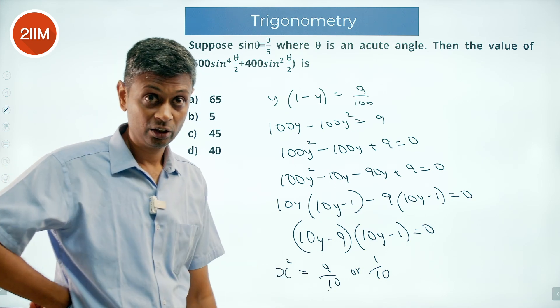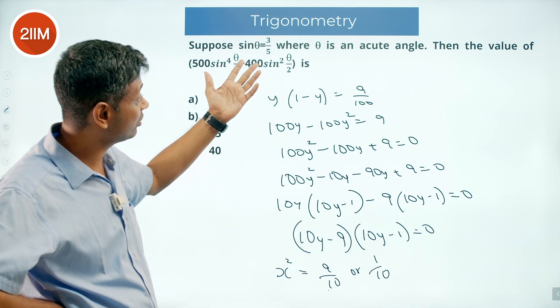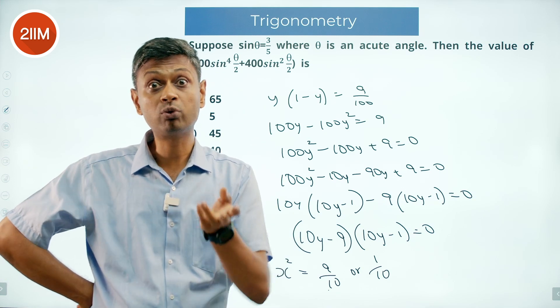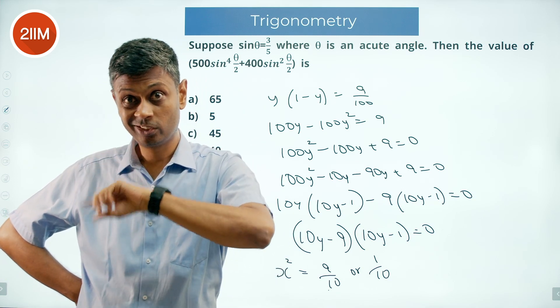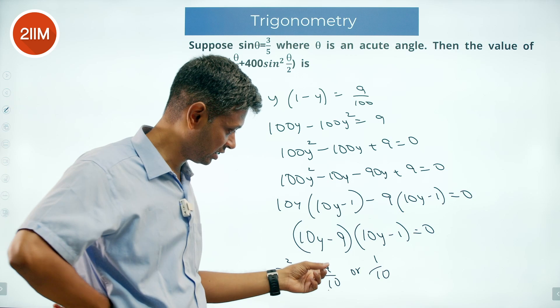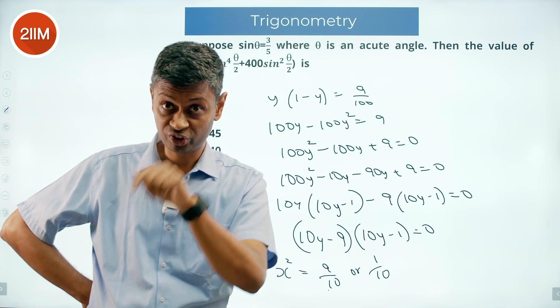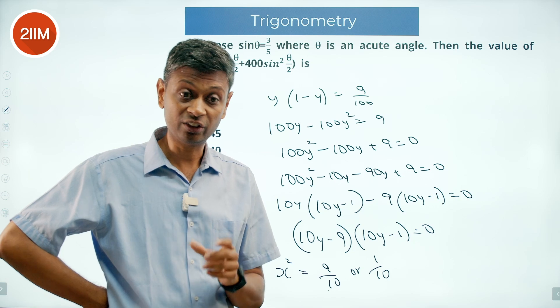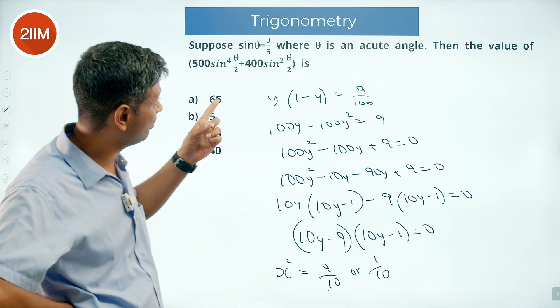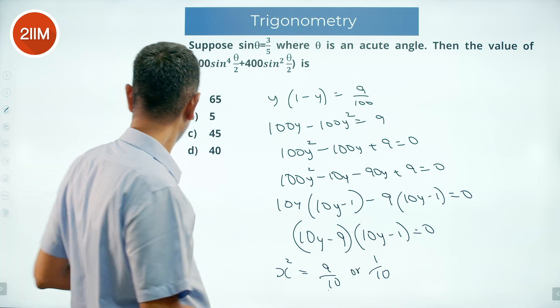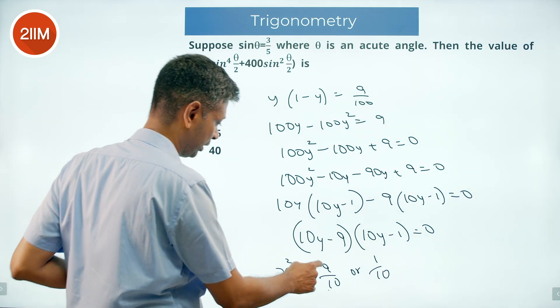So when will it be 9 by 10? Sine of 36 degrees is 0.6, sine of 144 degrees is also 0.6. At 72 degrees it will be 9 by 10. But we are not talking about 144 degrees, we are talking about 36 degrees. Half of that is even smaller. Sine of theta by 2 should be less than sine of theta because theta is an acute angle. Therefore I will say this is not 9 by 10.